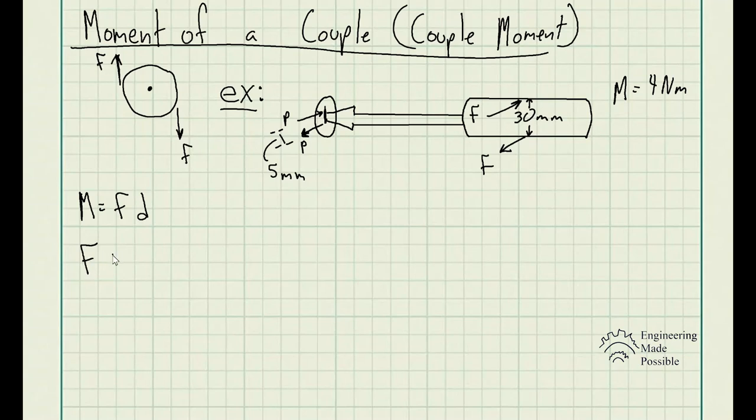We solve for F, which essentially is equal to the moment divided by D. In this case, since we're dealing with newton meters, we're going to convert the D, which is 30 millimeters into meters. So our moment is 4 newton meters and our D is 0.03 meters. So our force is 133 newtons, the force exerted on the handle.